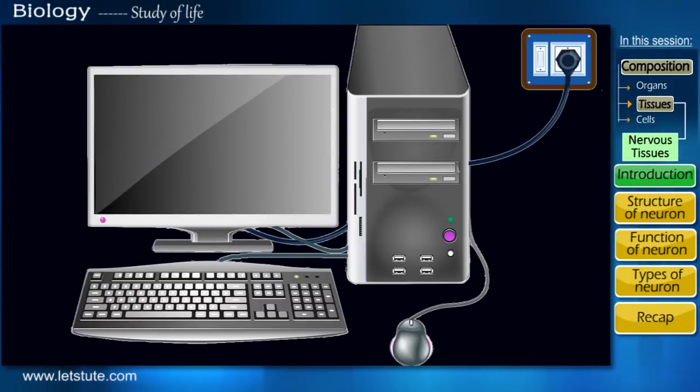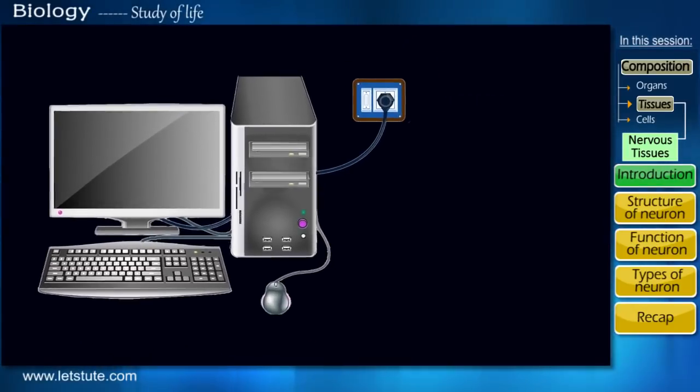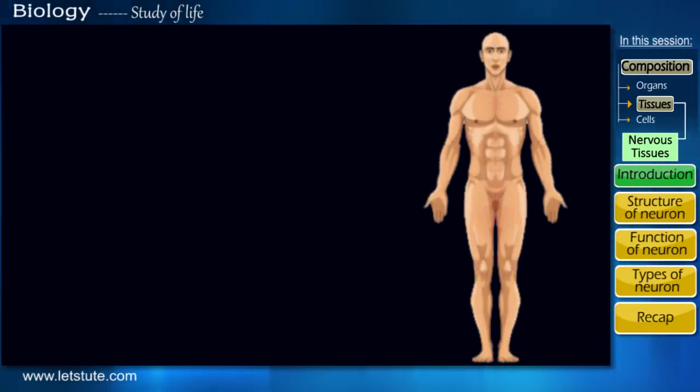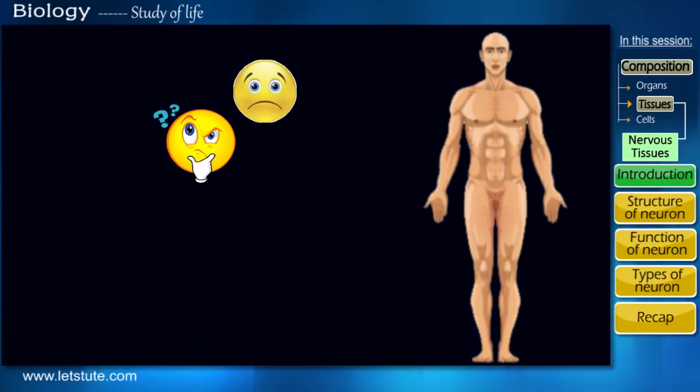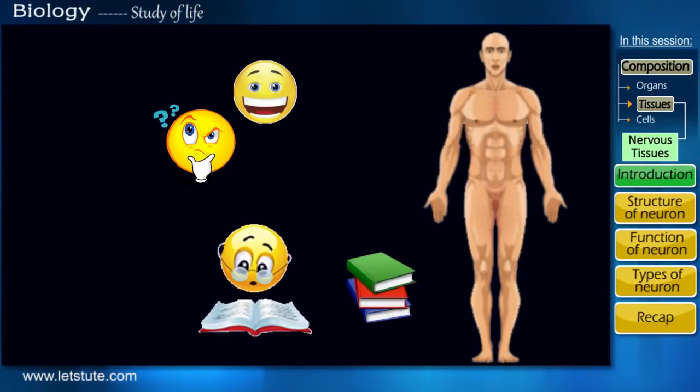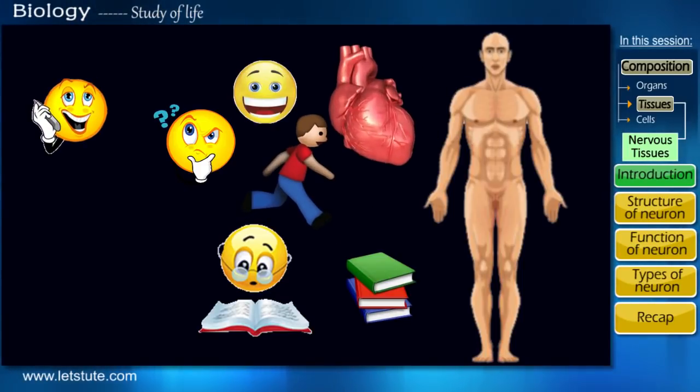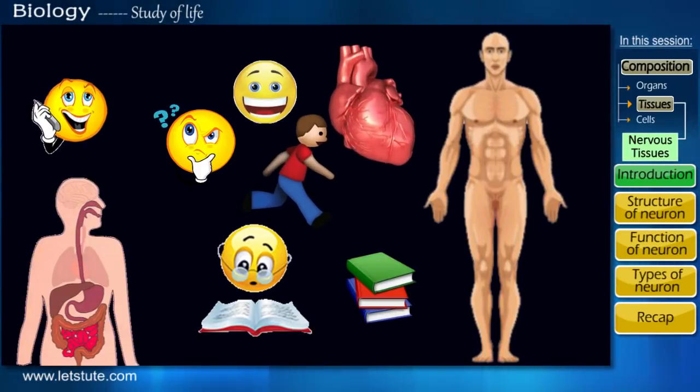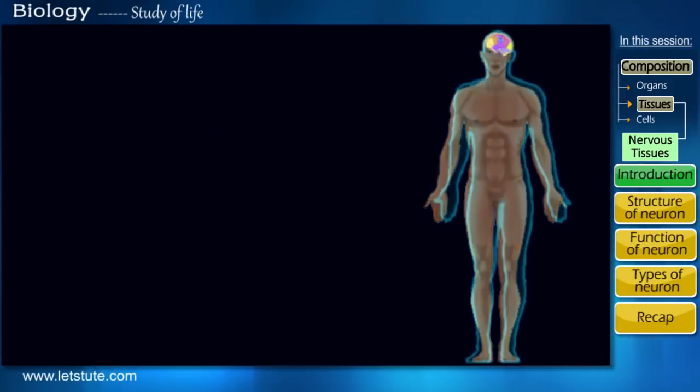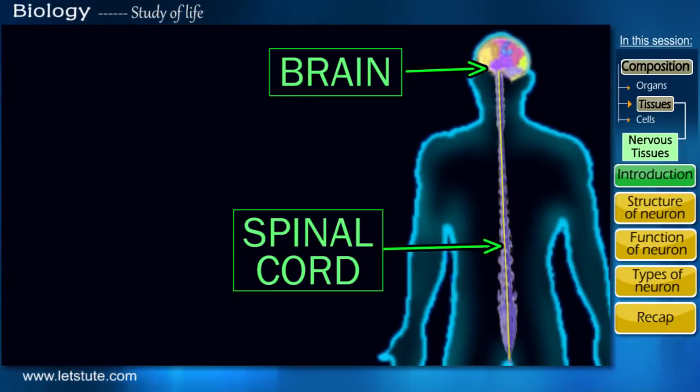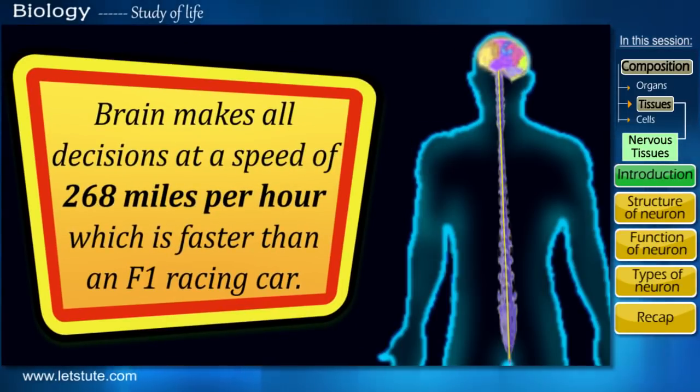But you'll be surprised to know that a similar working system is present in our body. A system that controls our thinking and feelings, our learning and remembering, the way we talk and move, the beating of your heart, and the digestion of your food. Yes, in our body, it is the brain which controls all the decisions we make, along with our spinal cord. And the brain makes all these decisions in a few milliseconds.